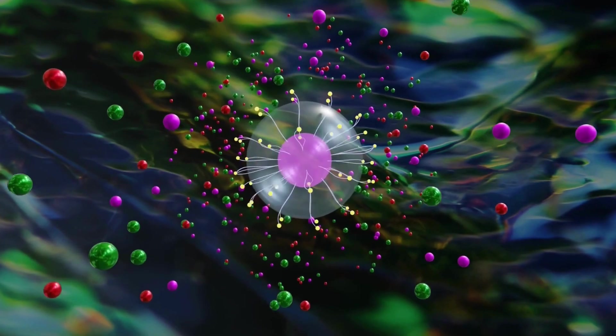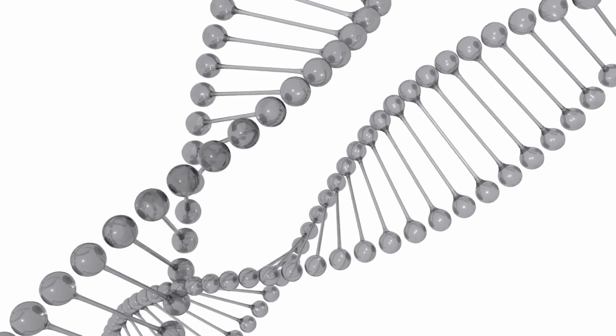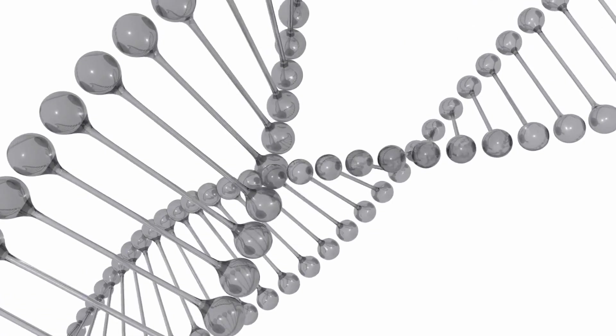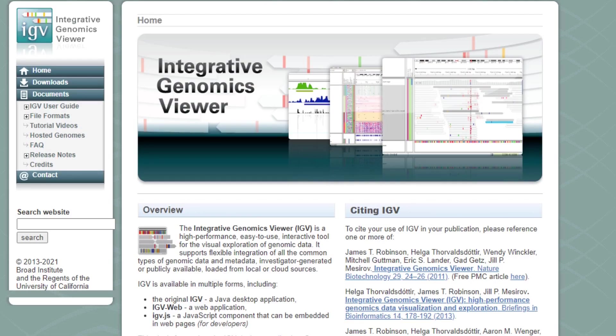Number 3: Genome Analysis Toolkit, GATK. This software is designed for the analysis of genomic data. It is widely used for analyzing the results of next-generation sequencing experiments. Number 4: Integrative Genomics Viewer, IGV. This is a visualization tool that allows researchers to view and analyze genomic data. It is particularly useful for identifying and analyzing genetic mutations.